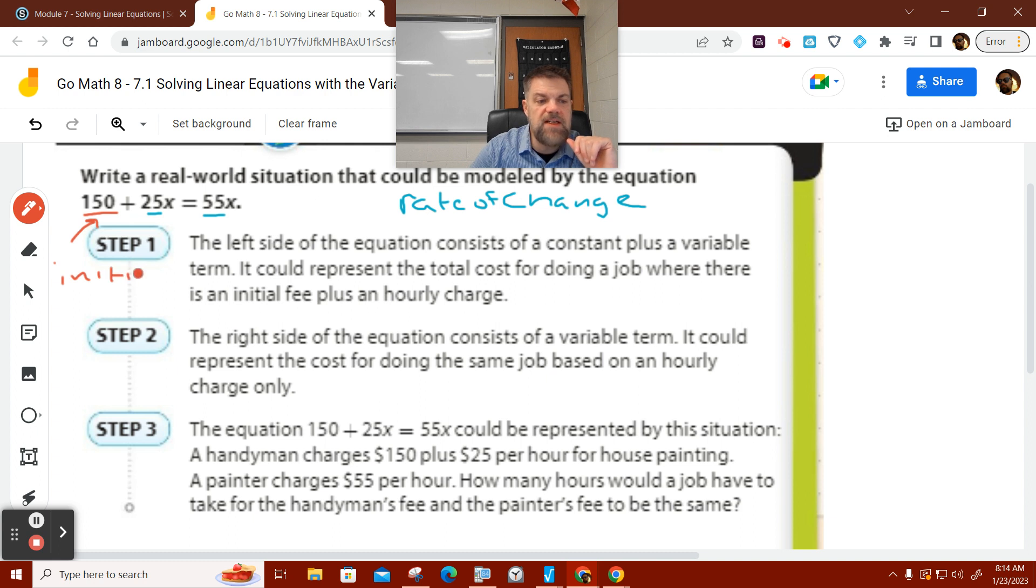So we're comparing two scenarios where, in one scenario, we have something that costs 150 up front plus 25 times whatever x is. In the other scenario, we just pay 55 times whatever x represents. Does that make sense? And we're trying to see where these two expressions are equal.